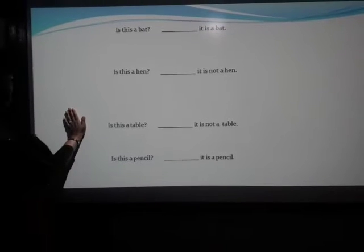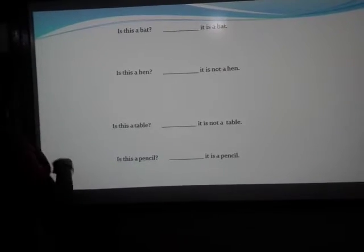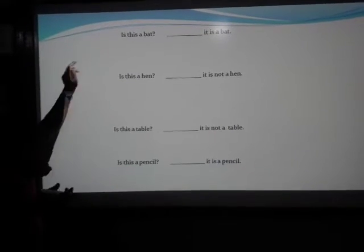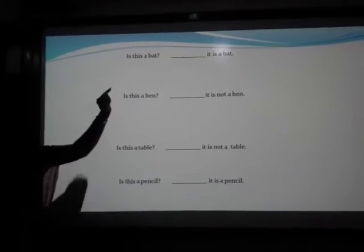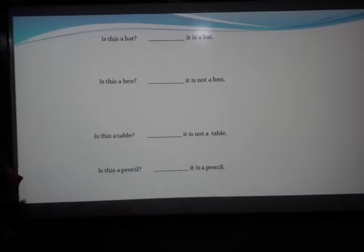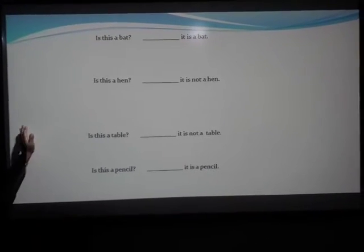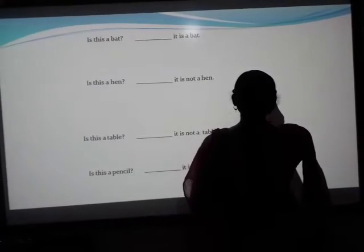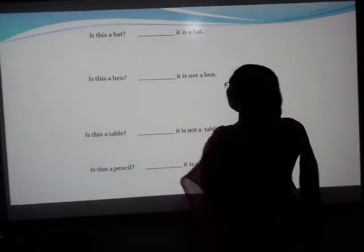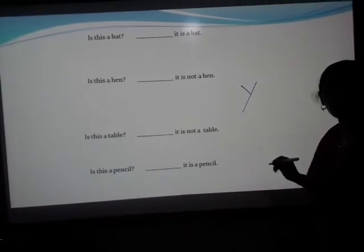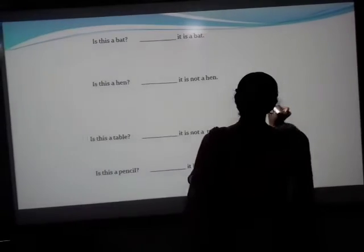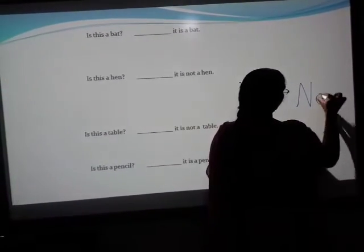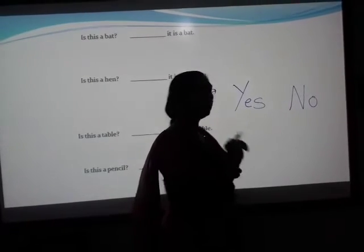And now, writing path. Here, some sentences are there and we are going to write. For that, yes or no. First of all, I will tell you the spelling of yes or no. For yes, we are writing Y-E-S. And for no, we are writing N-O, no.